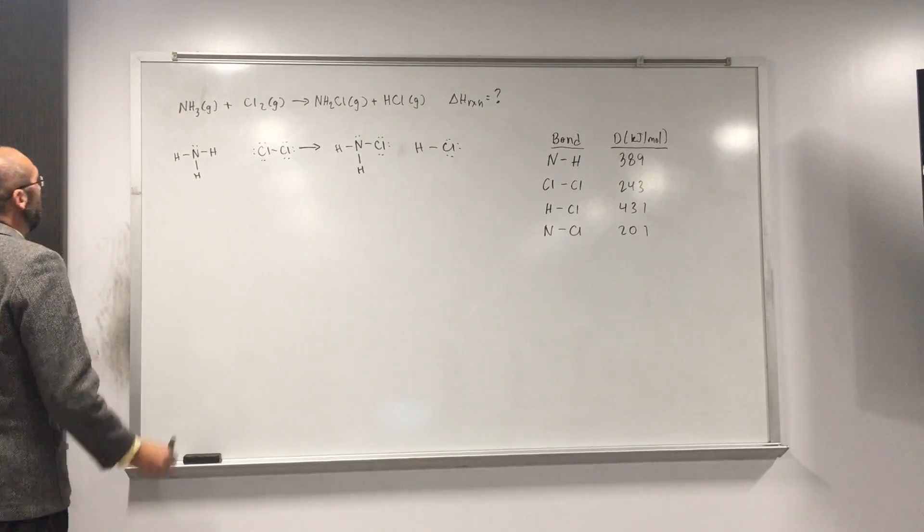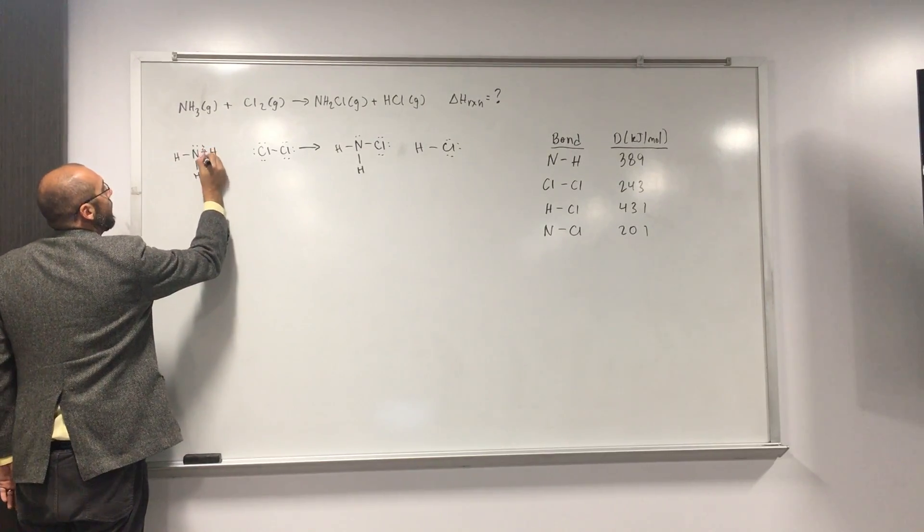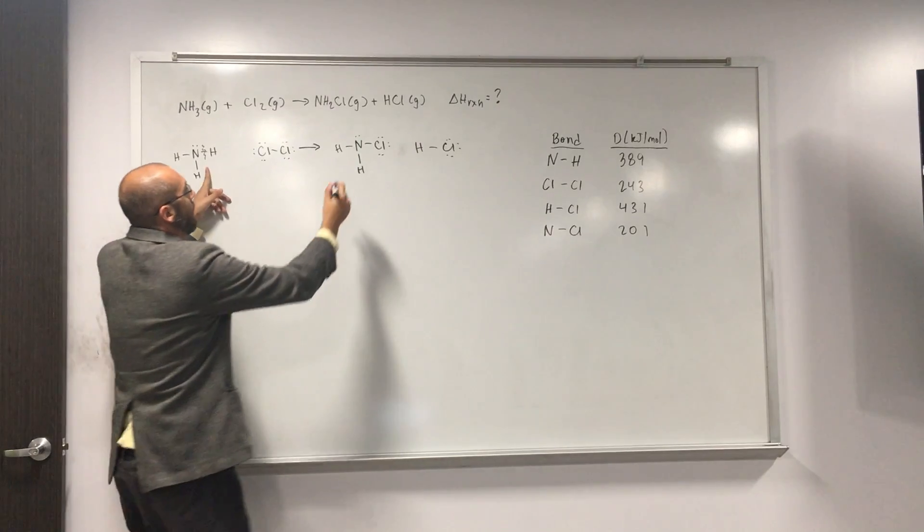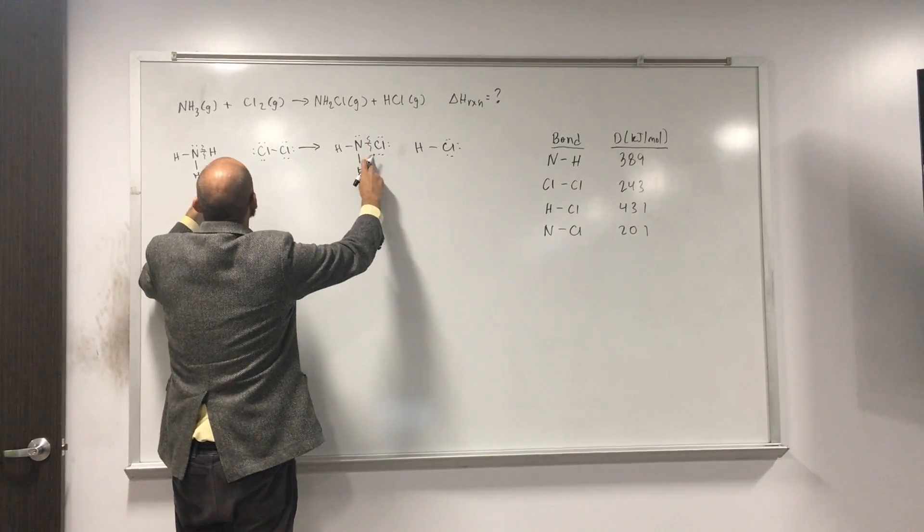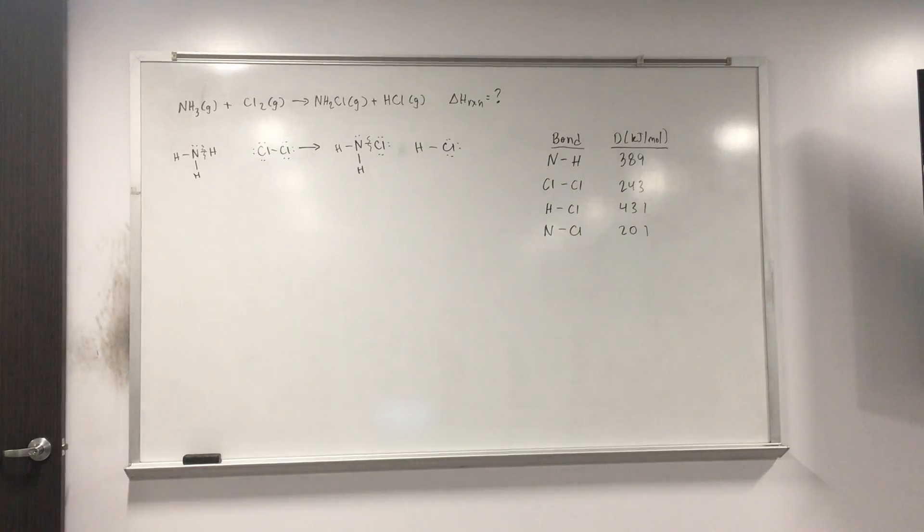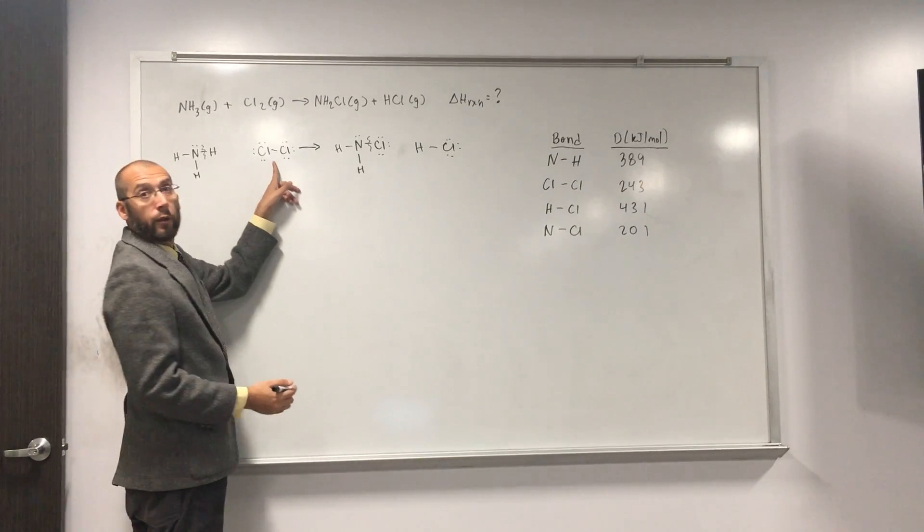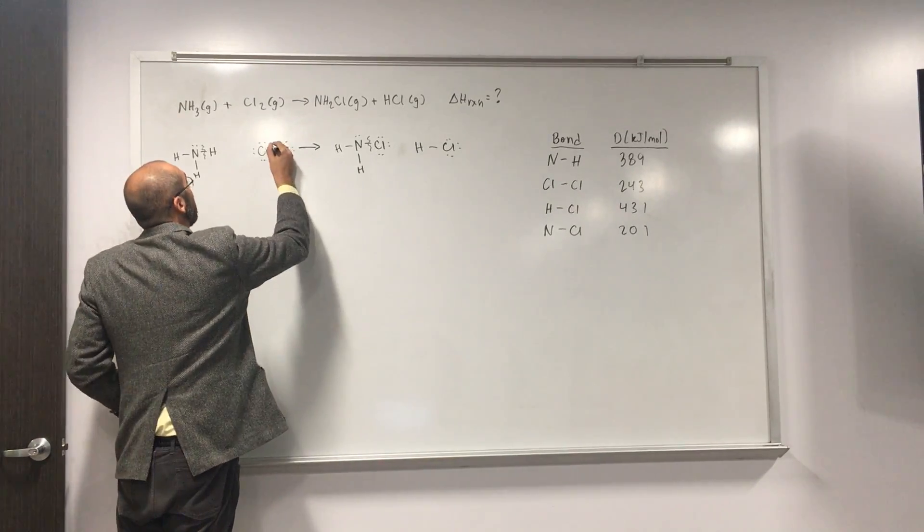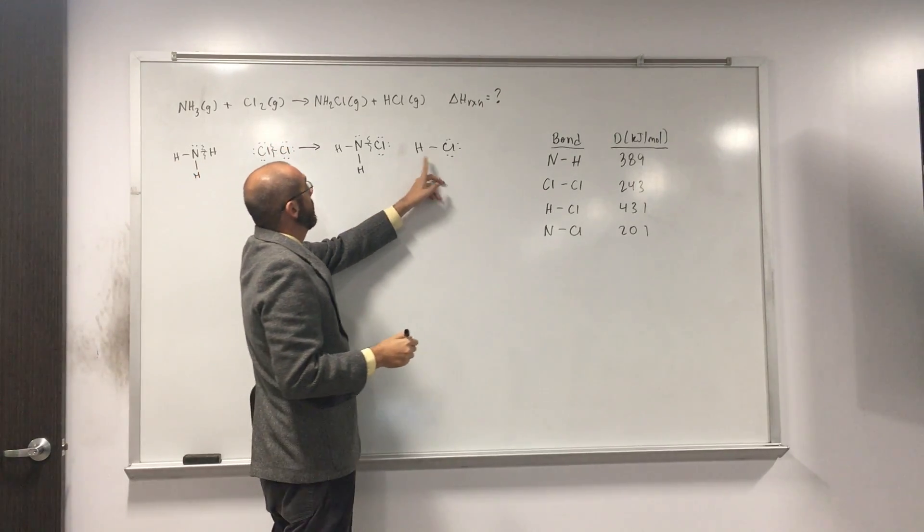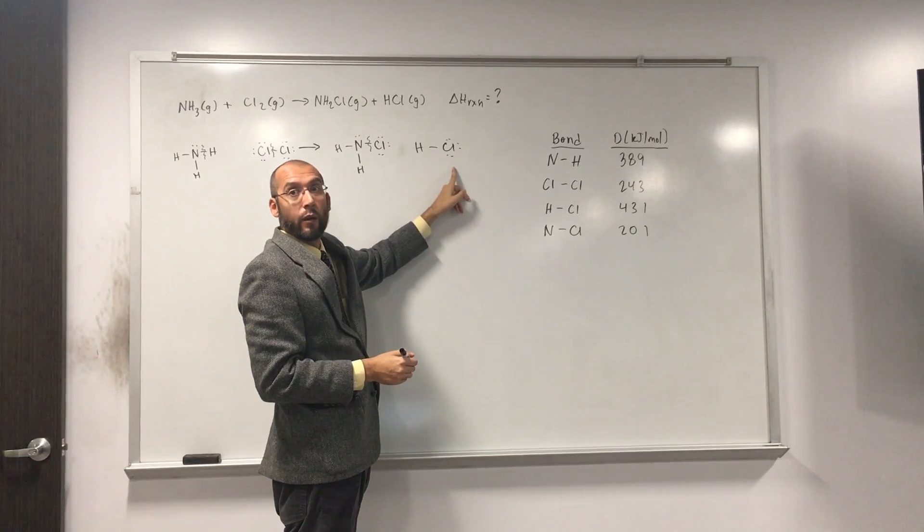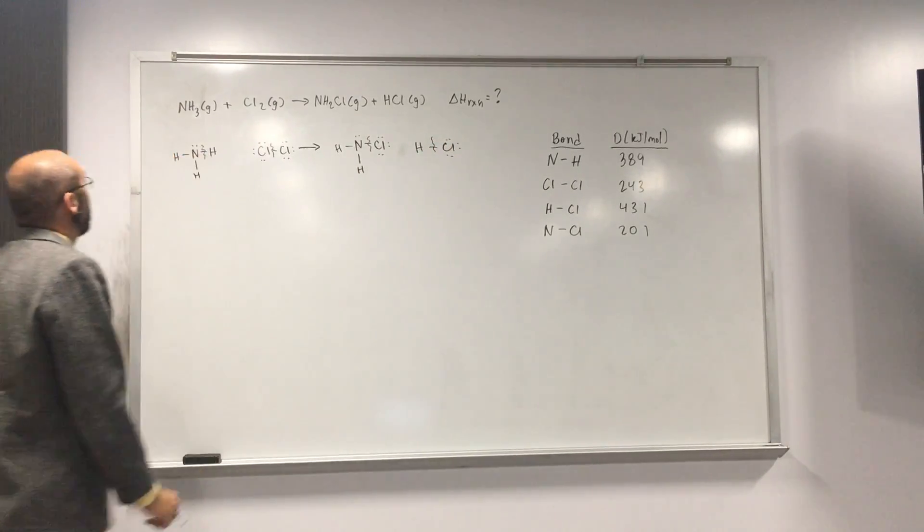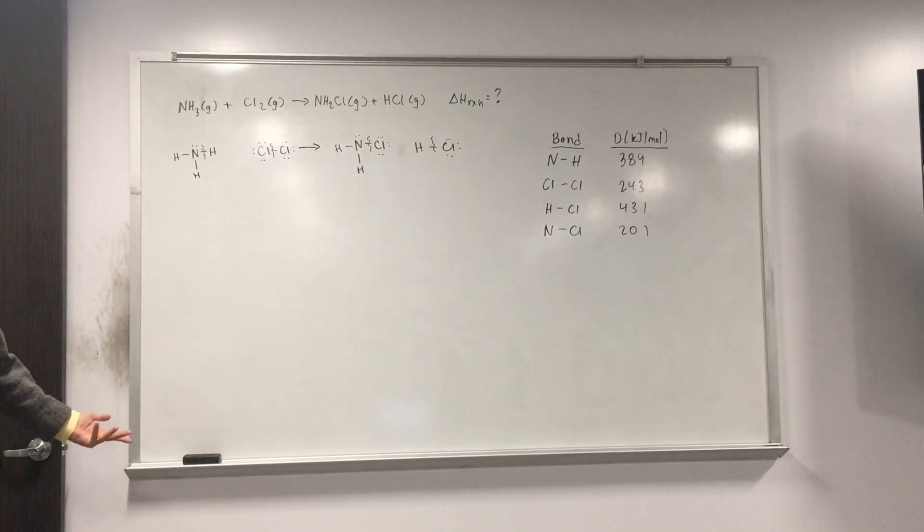So if we look here, hopefully we can see we've got this bond here that's breaking, this one forming here, right? The other two bonds, nothing happened to them. So we don't have to put them in our formula. If we did, it'd be okay, but we'd have to resubtract them out. So also we see the chlorine-chlorine bond broke, right? And an HCl bond was formed, right? So those are the bonds that we need to focus on.